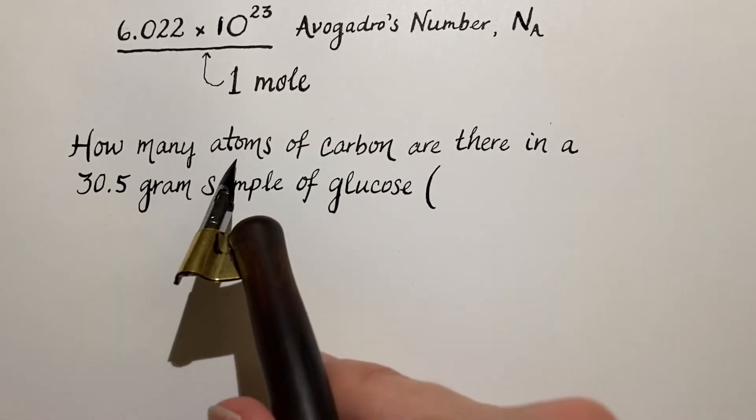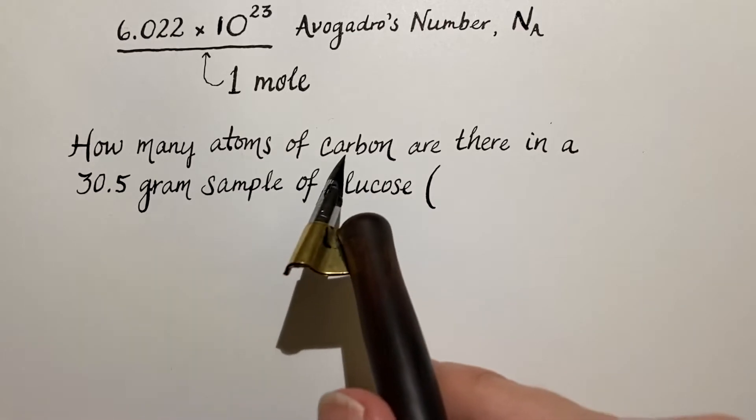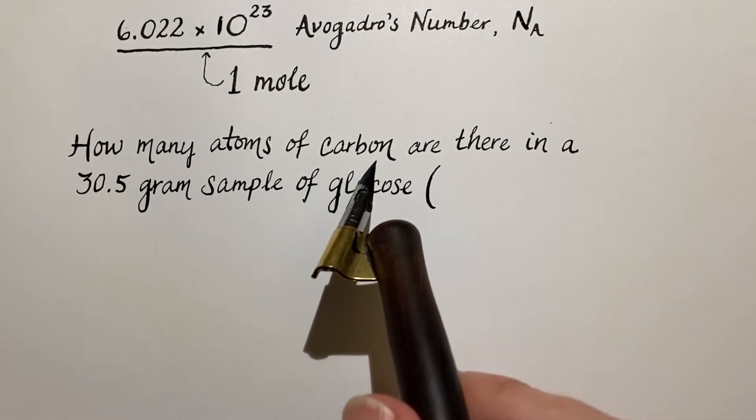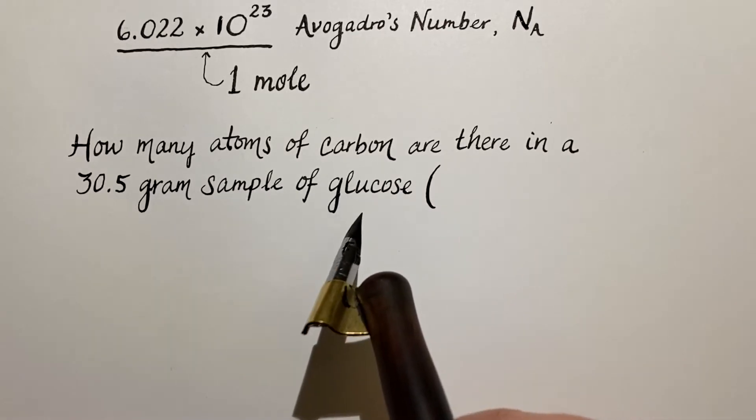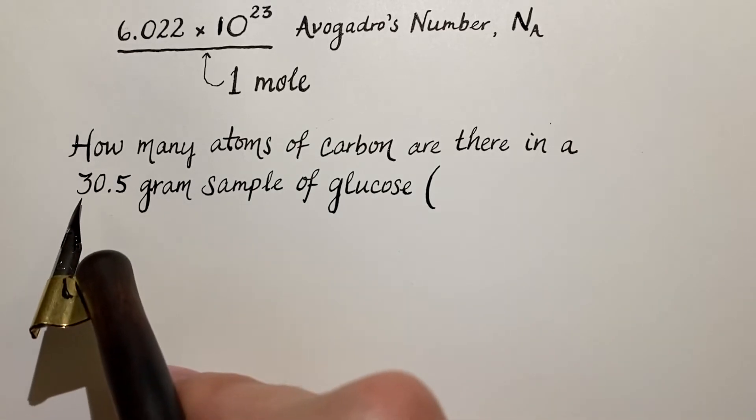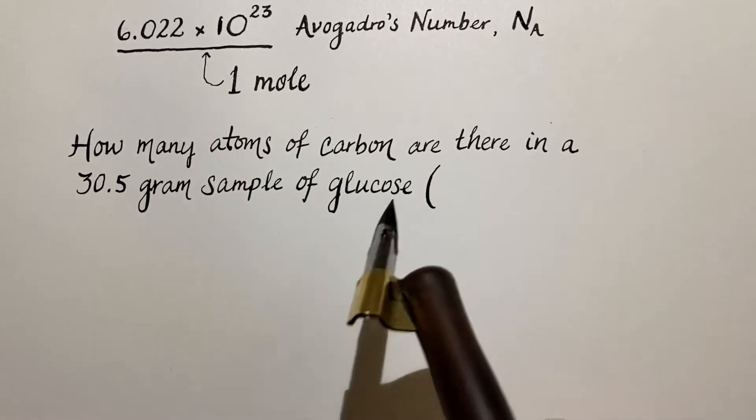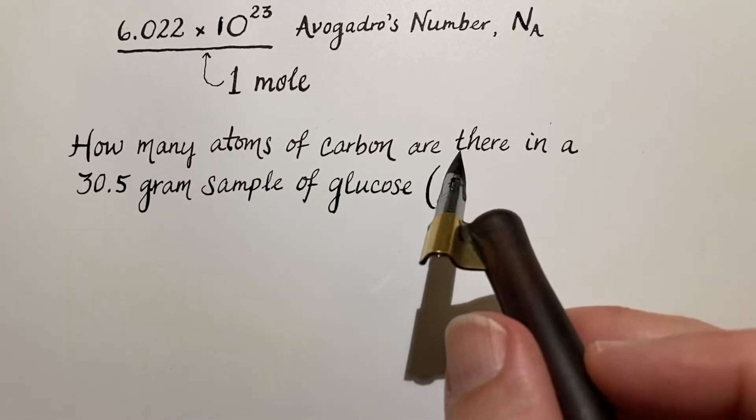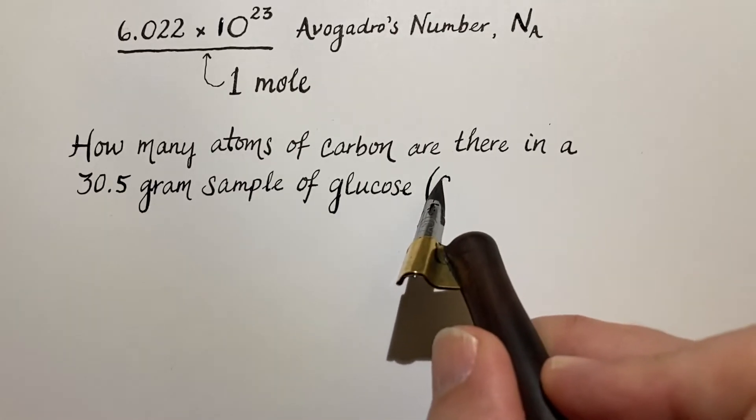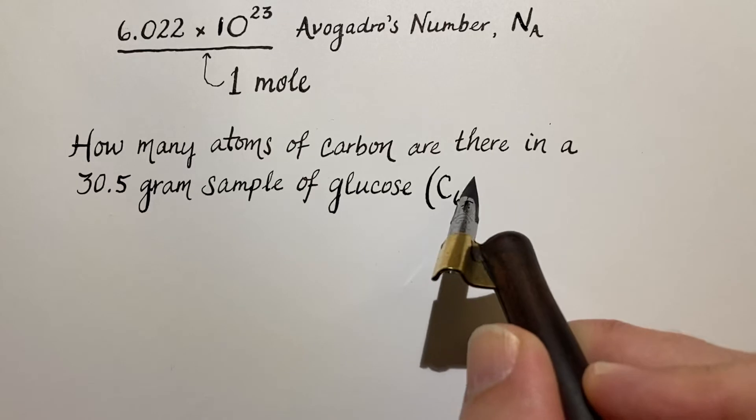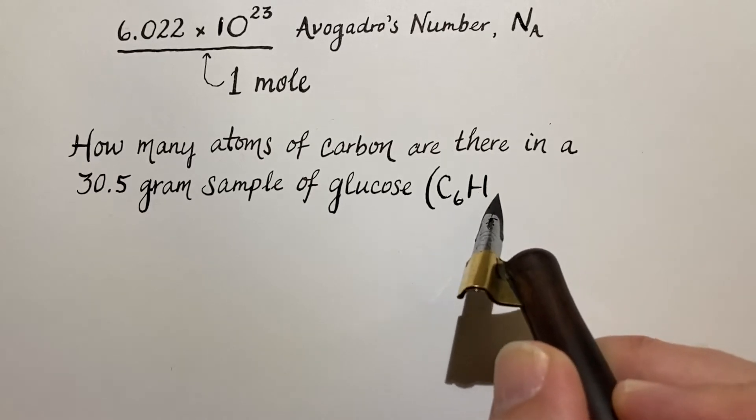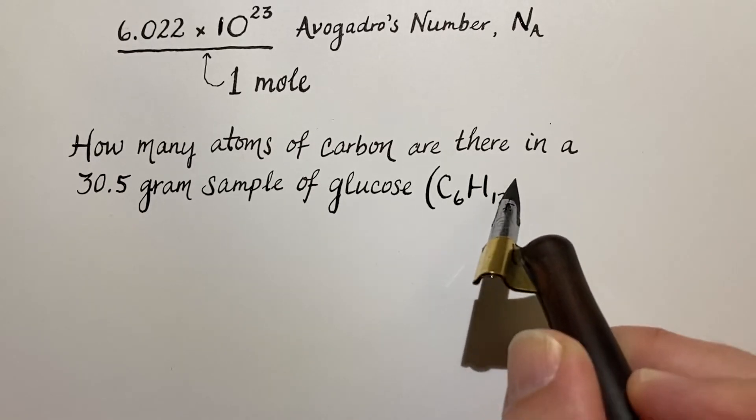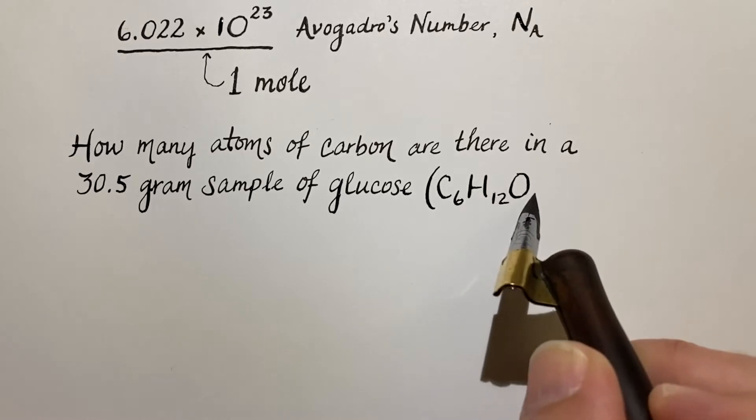Can we determine how many atoms of the element carbon are there in glucose if we have 30.5 grams of it? We do need to know the formula: C6H12O6.